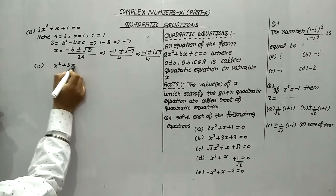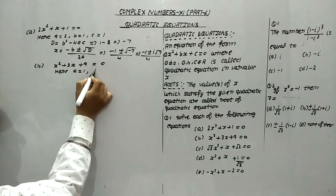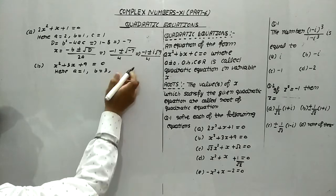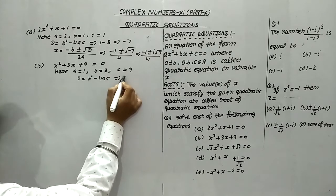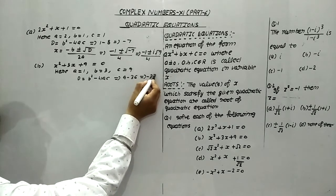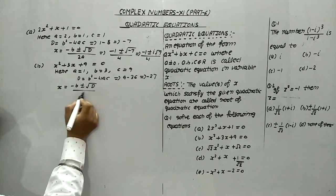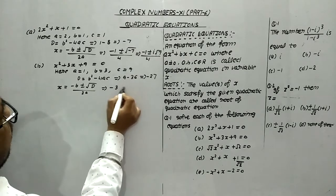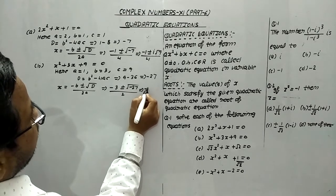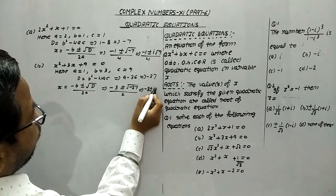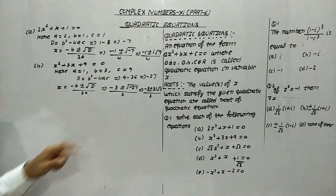Part (b): x² + 3x + 9 = 0. Here a = 1, b = 3, and c = 9. D = b² − 4ac = 9 − 36 = −27. So x = (−b ± √D) / 2a = (−3 ± √(−27)) / 2, which gives x = (−3 ± 3i√3) / 2. And this is the answer.